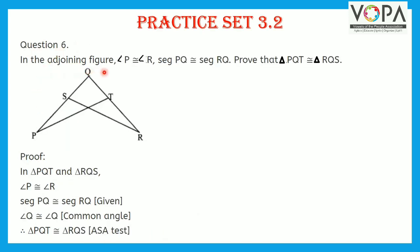Question 6. In the adjoining figure, angle P is congruent to angle R and segment PQ is congruent to segment RQ. Prove that triangle PQT is congruent to triangle RQS. Solution. In triangle PQT and triangle RQS: angle P is congruent to angle R — which is given — segment PQ is congruent to segment RQ — given — and angle Q is congruent to angle Q, which is a common angle. Therefore, triangle PQT is congruent to triangle RQS by ASA test of congruency.